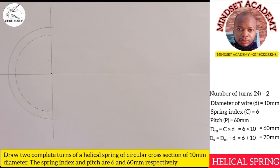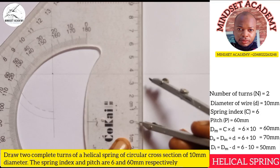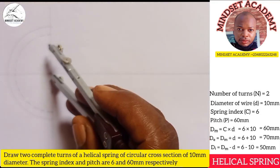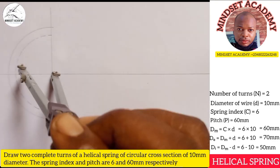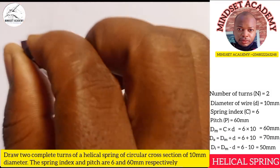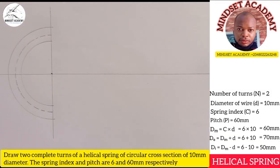Next we get the inner diameter, which equals the mean diameter minus the cross-section: 60 − 10 = 50mm. I take half of 50, which is 25, place it at the centre, and draw the inner diameter. Now we have the outer diameter, mean diameter, and internal diameter.